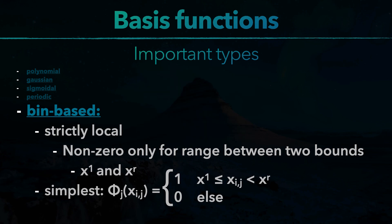In most situations though, a smooth function gives better results. So if we want a smooth but strictly local function, we'll have to build a bin-based function from multiple polynomial functions. Which then is called a piecewise polynomial function.